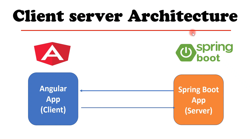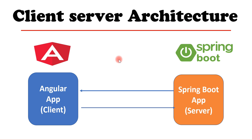Let's take a look at the client-server architecture. On the server side, we have a Spring Boot application that creates and exposes a REST API. On the client side, we have an Angular application used to develop a single-page application that consumes the REST APIs exposed by Spring Boot. This is how the client-server architecture looks. Thanks for watching — I'll see you in the next one.